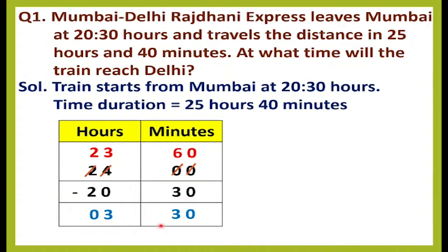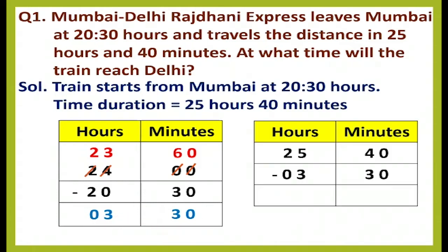We have to subtract this 3 hours 30 minutes from 25 hours 40 minutes, because the total time duration is 25 hours 40 minutes. The answer will come for the next day. 40 minus 0 is 0, 4 minus 3 is 1, 5 minus 3 is 2, and 2 minus 0 is 2.